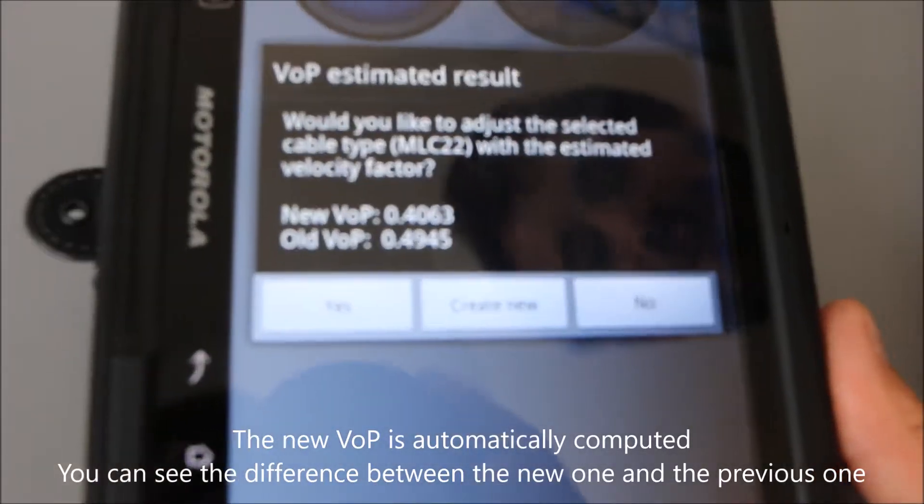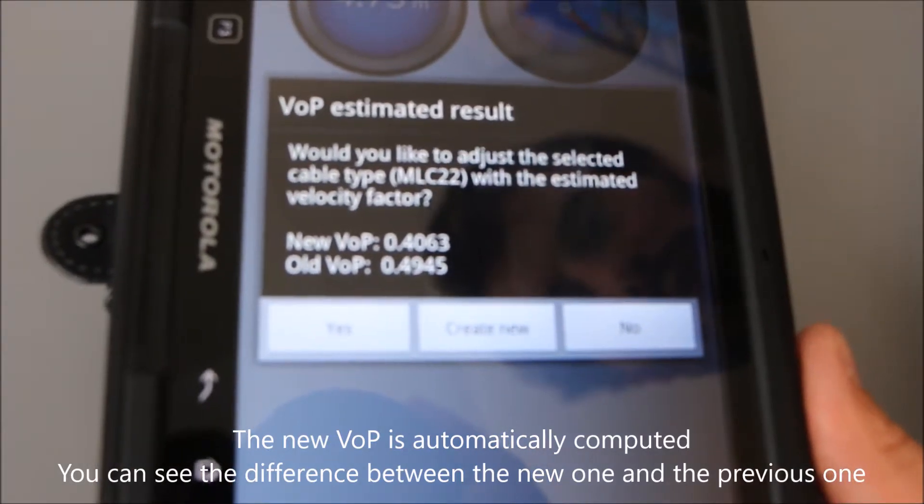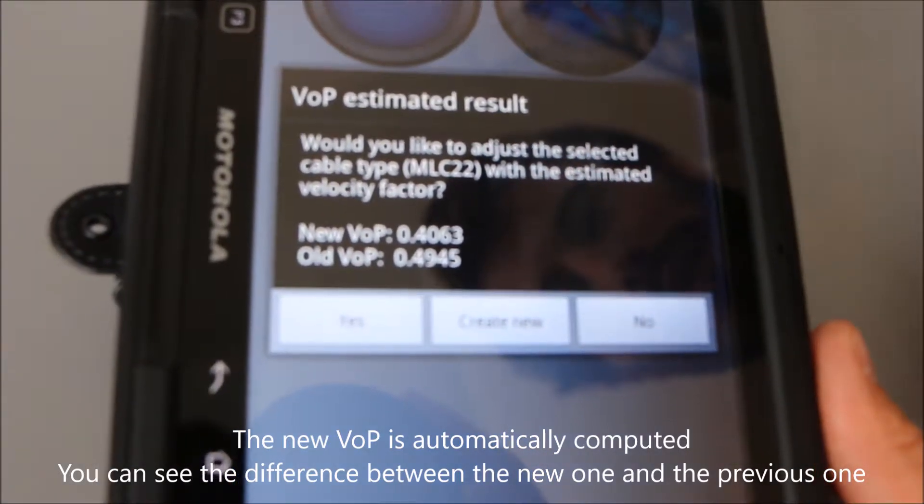And now the tablet has just computed the new velocity of propagation. You can find also the old one and the new one.